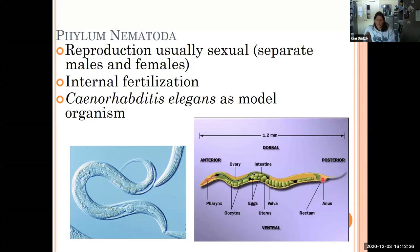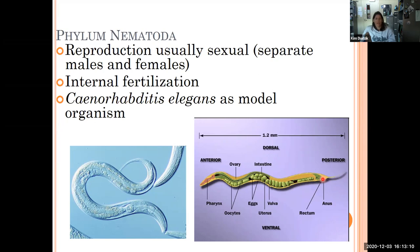Reproduction is usually sexual with separate males and females, and they have internal fertilization. You can see all the eggs filling the body of the female and the ovaries in the image. C. elegans is a free-living soil nematode that is an important model research organism for studying genetic control of development. A lot of what we've learned about Hox genes and other things is from C. elegans. They tend to be pointed at both ends, and you can see that tough, flexible cuticle that helps give their body shape and protection from the environment.